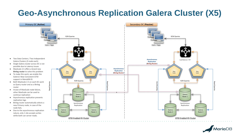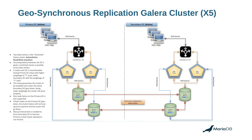Moving on to the third architecture — this is similar to what we've seen before but much simpler. Instead of three nodes, we configure a four-node Galera cluster. This is also called a stretched Galera cluster, where we stretch one cluster across two data centers. This kind of setup with two data centers is recommended to have two nodes on each data center.